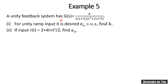A unity feedback system has G(s) equals to K over s times (s+2) times (s²+2s+5). For unity ramp input it is desired that E_ss is less than or equal to 0.25. We will find the value of K. Also, if input r(t) equals 2 plus 4t plus t²/2, find E_ss.